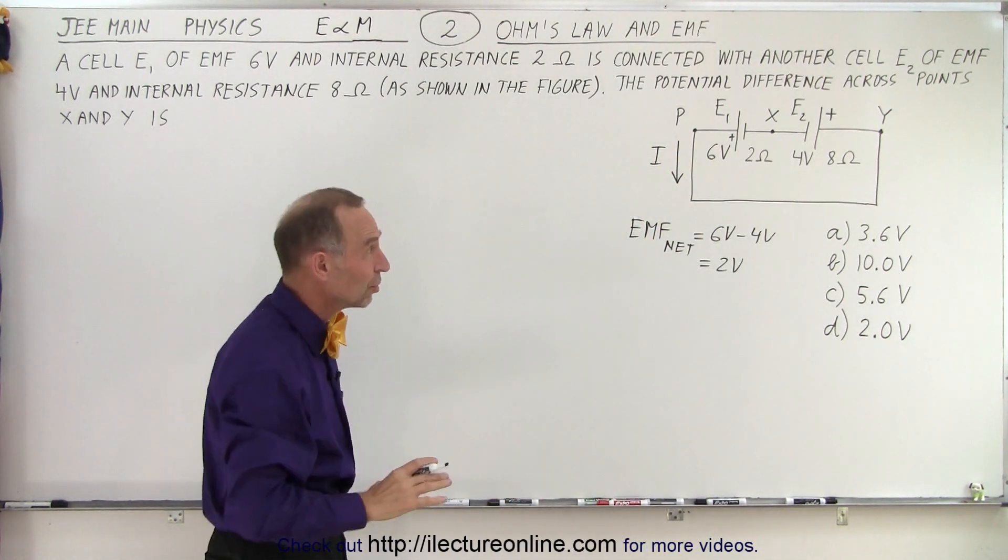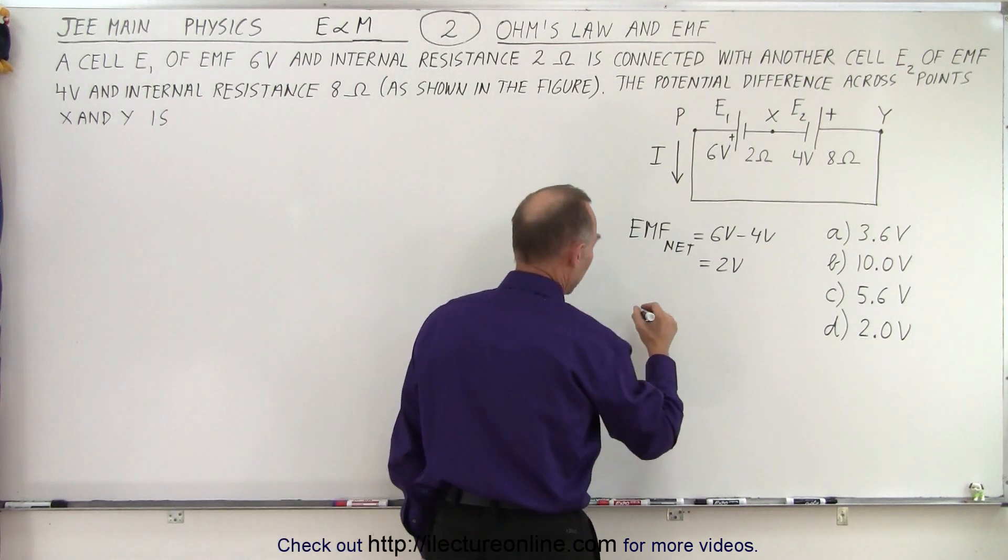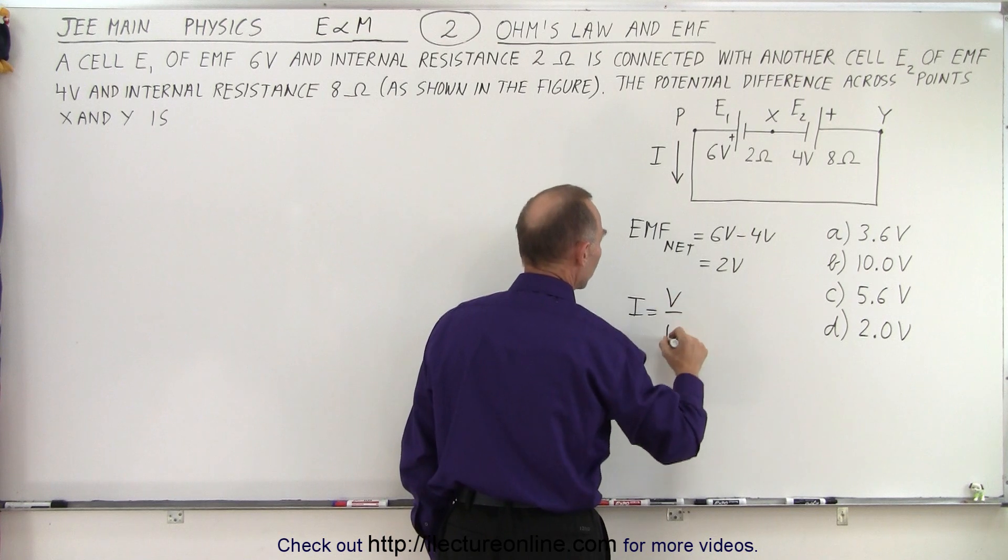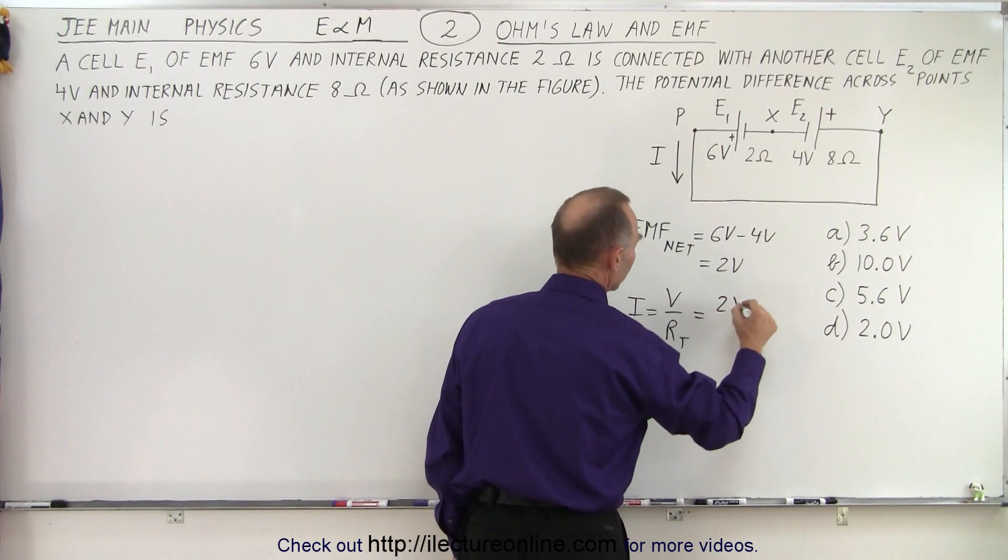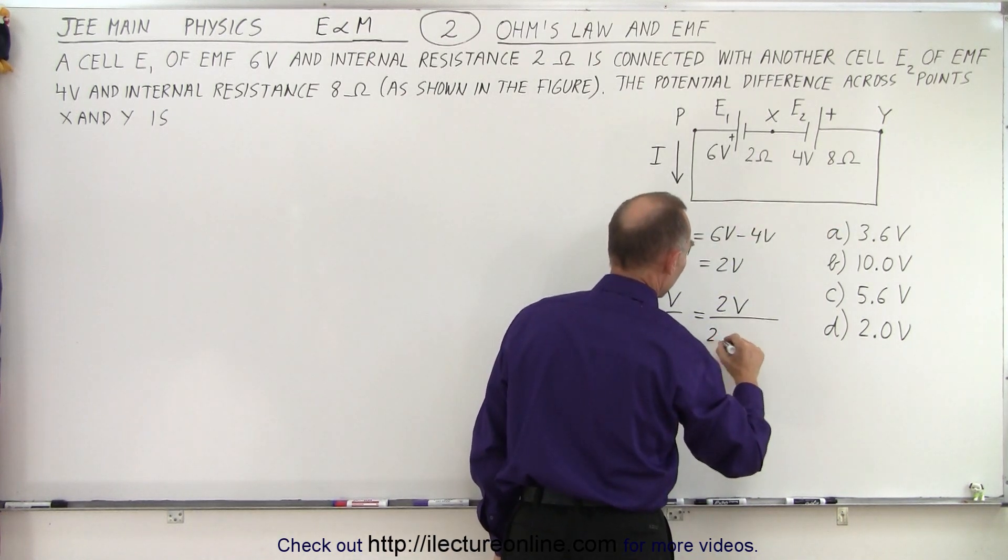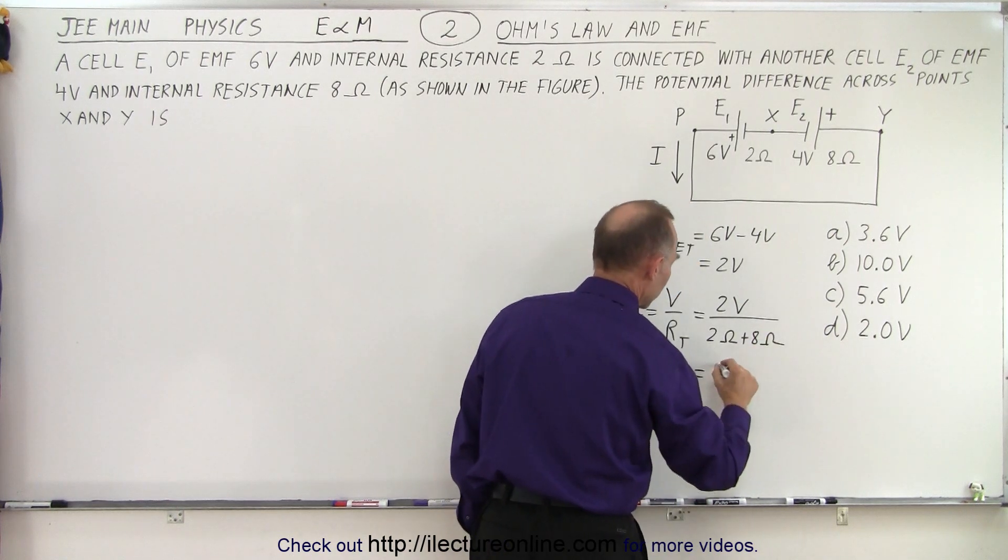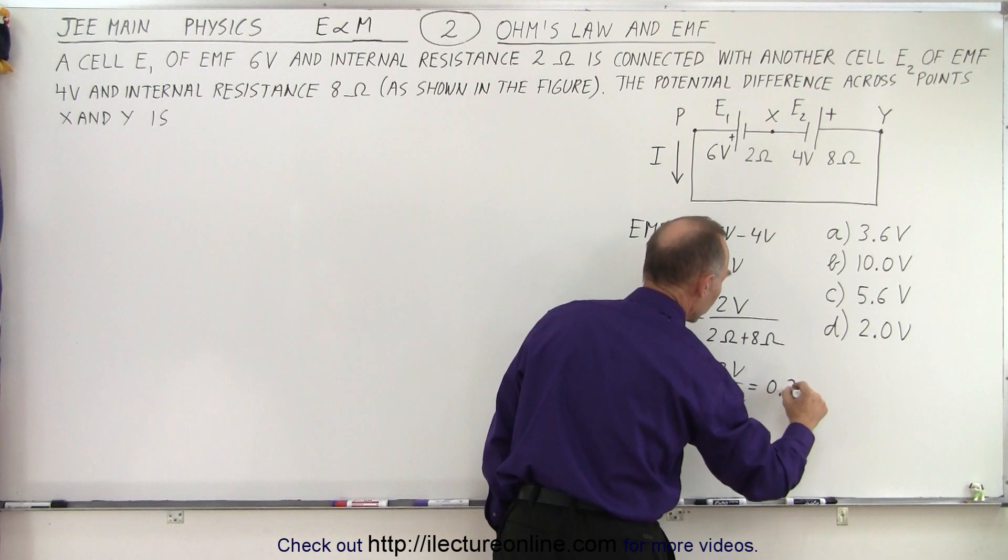So the next thing we need to do is use Ohm's law to determine the current in the circuit. We can see that by Ohm's law the current I equals V over the total resistance. In this case the V is the net voltage of 2 volts and the total resistance would be the sum together 2 ohms plus 8 ohms which is 10 ohms, so that would be 2 volts divided by 10 ohms or 0.2 amps.